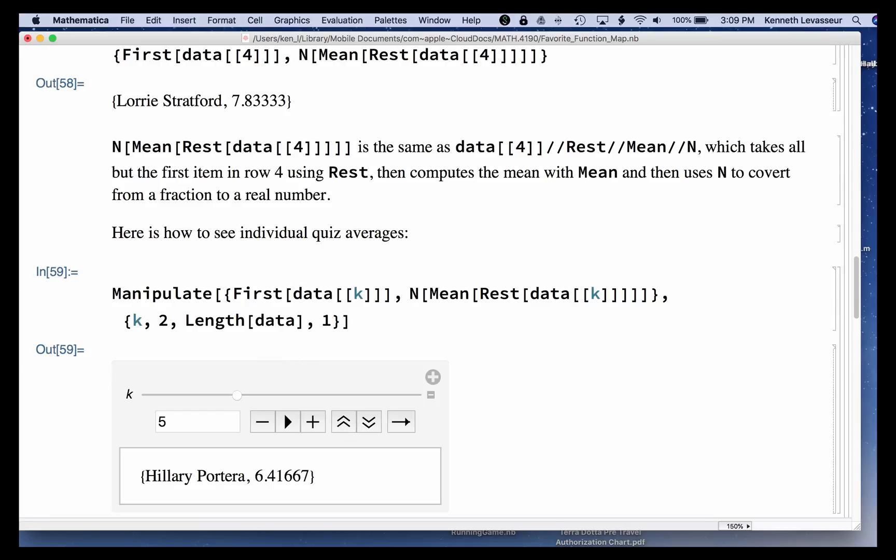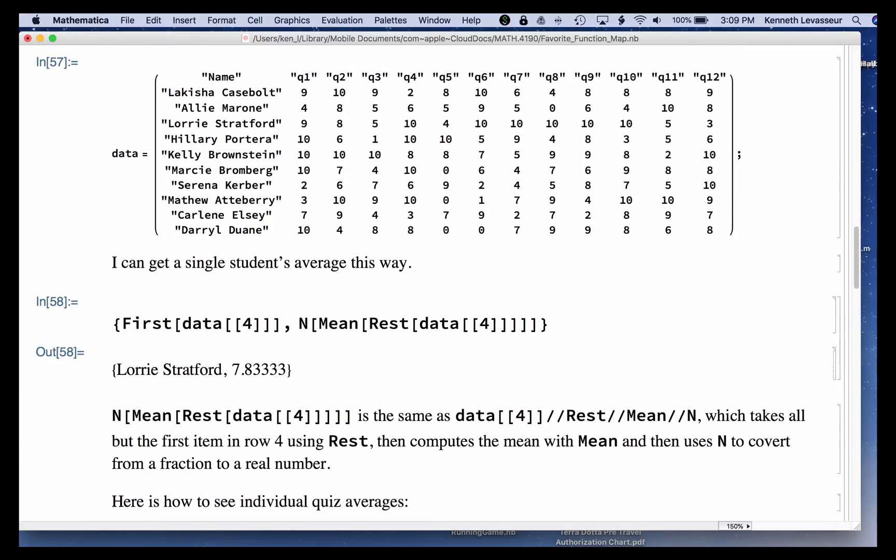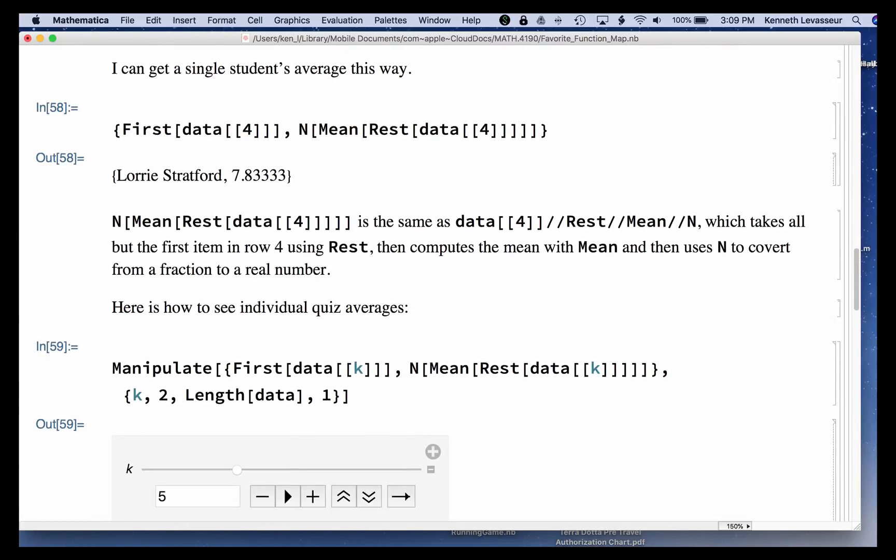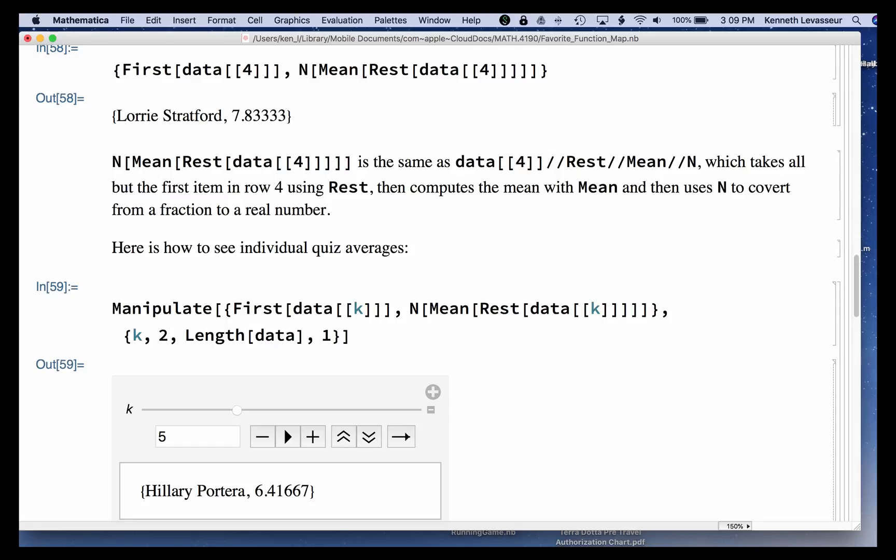Basically the same expression as we did with Lori up above, only instead of four, I use a variable k to be able to vary it. And k starts at two, because you notice that the original list does have a header list. I don't want to be computing that row. Up through, and I didn't even want to have to count the number of students in the class, so the upper limit is going to be the length of data, the number of rows in data, and in steps of one. If you leave out the steps of one, you're going to get a problem because there are no fractional parts.